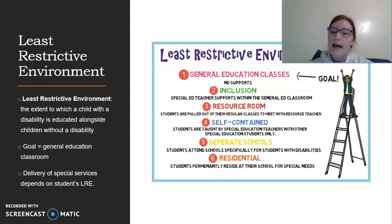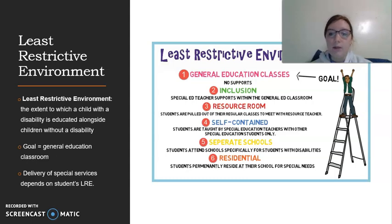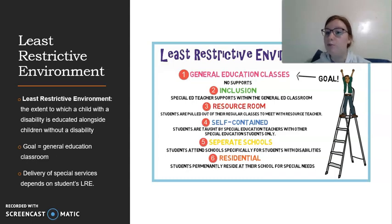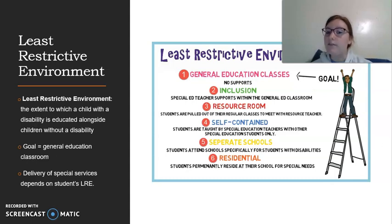For example, if a student is at level two — inclusion — there's going to be a para beside them helping out during the time needed. If the inclusion isn't working and they need even more support, they'll go to the resource room to get more individualized support in math. So the delivery of special education services looks different based on what the student's least restrictive environment is.